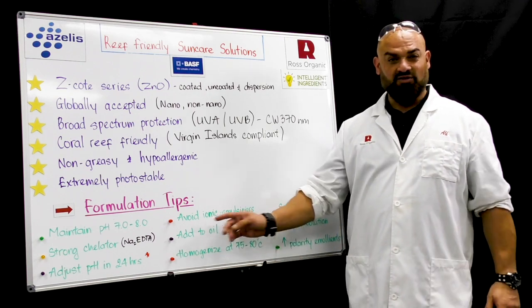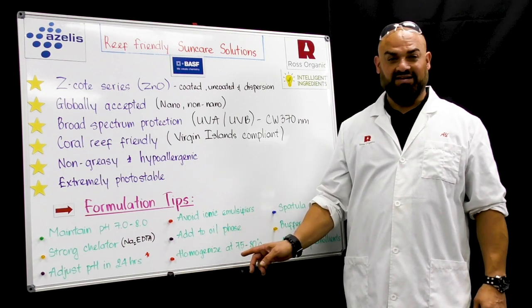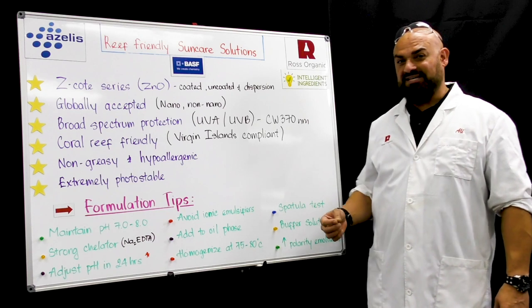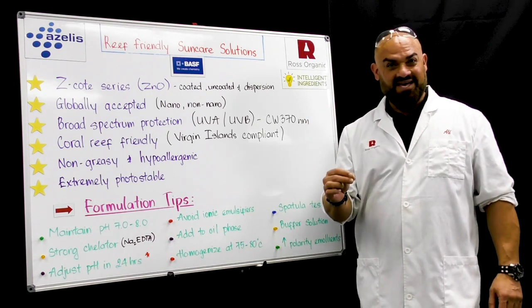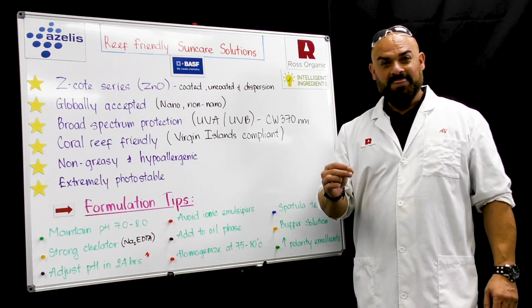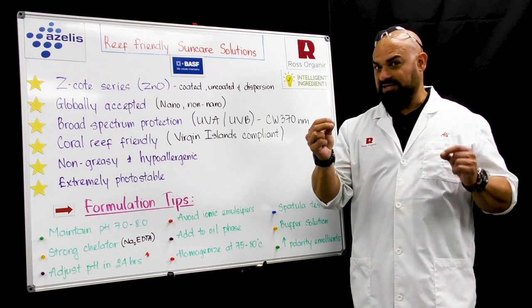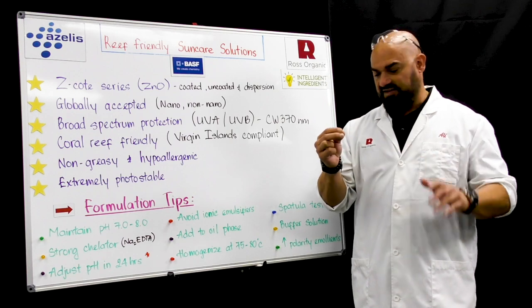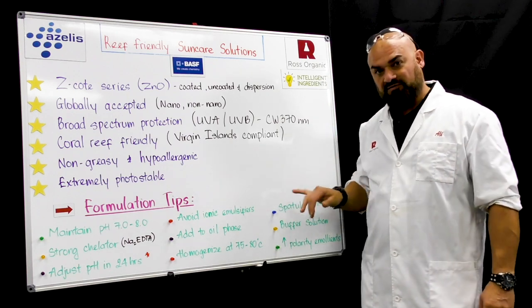Add zinc oxide to the oil phase and we ask you to heat to 75 to 80 degrees and homogenize. After you do that, you should do the spatula test. Basically you dip a stainless steel spatula in the batch and pull it out and look at it. If it looks non-grainy, shiny, glossy, it looks like thin paint, then you're ready to go. You can just finish the batch. Just make sure that the particles are fully dispersed.